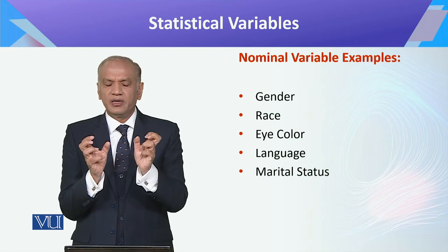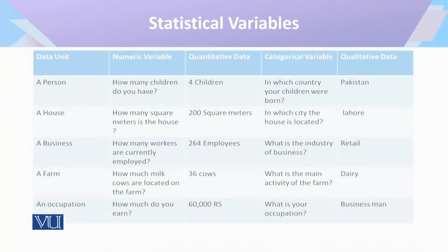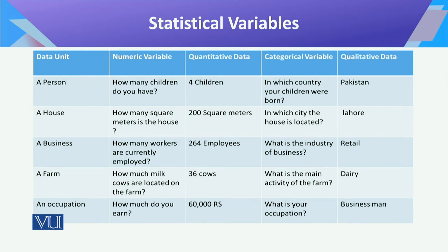But this is just a way of identifying different variables. This chart is very interesting — it helps you understand everything from a single chart. For example, for one person, how many children they have is a numerical variable. Whether they live in Pakistan is qualitative, but how many there are is numeric. In this way different variables are linked with each other — they are not totally exclusive. When we talk about statistical data, we have to see how many occurrences a qualitative thing has, and how to use it.